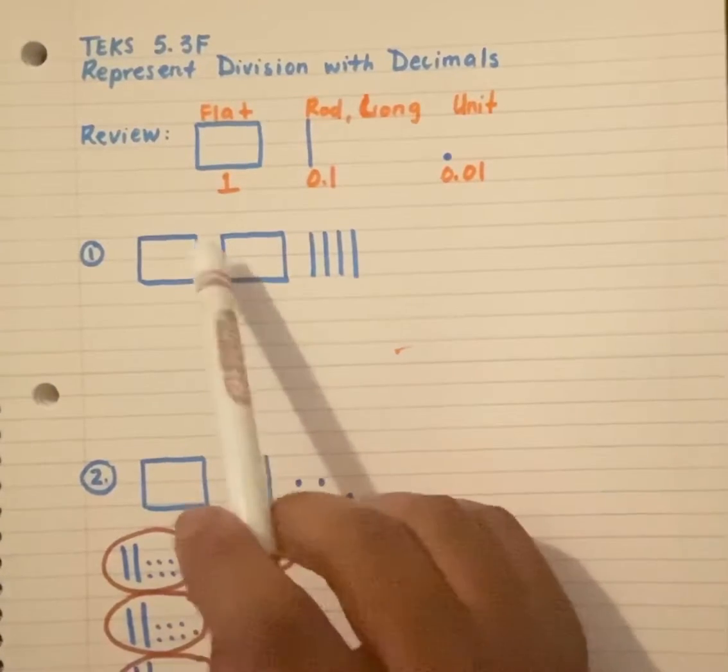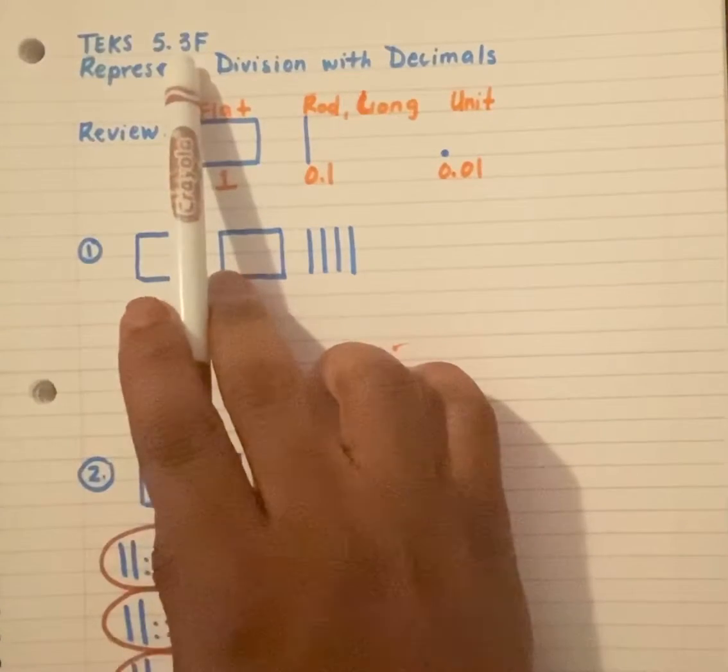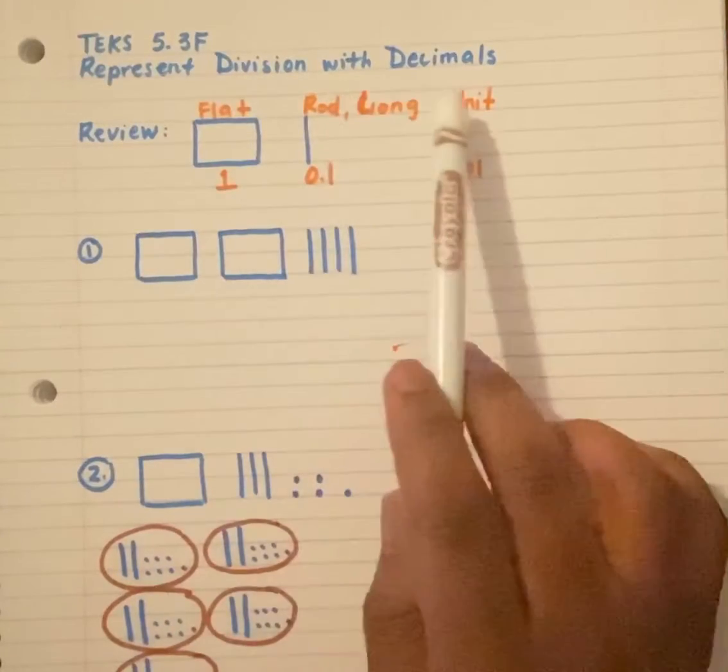All right, today we're talking about TEKS 5.3F, which is represent division with decimals.